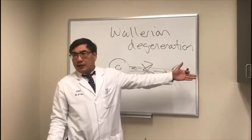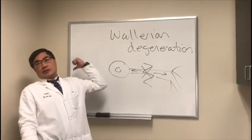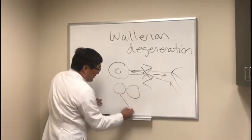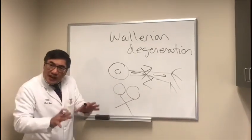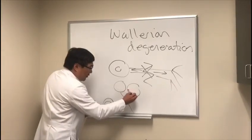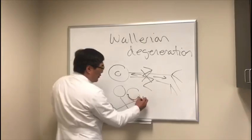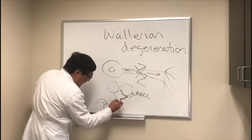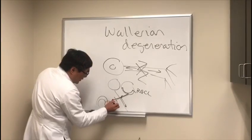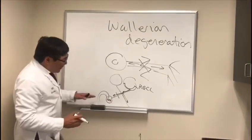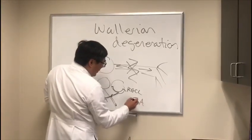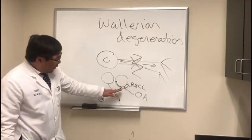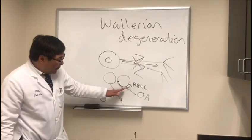We have anterograde degeneration and retrograde degeneration. The cell body is where the damage occurs, and this is super important because the axon of the optic nerve is very long. It starts as a cell body in the retina — the retinal ganglion cell — and that axon enters the optic nerve. The nasal fiber crosses and the temporal fiber doesn't, traveling to the geniculate body. Optic atrophy visible inside the eye can result from lesions in the retinal ganglion cell (like glaucoma) or in the intraocular, intraorbital, intracanalicular, or intracranial portions of the optic nerve.